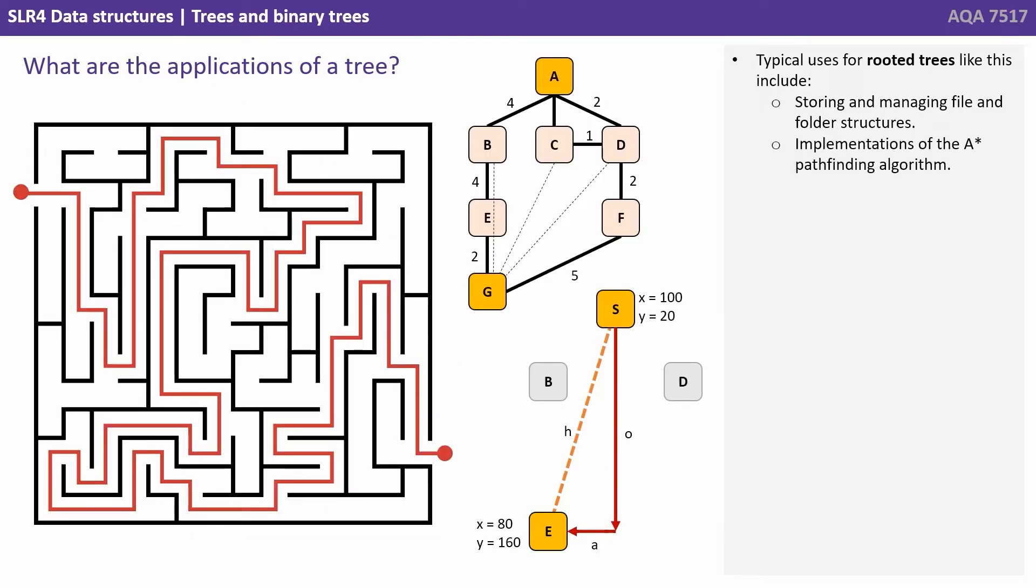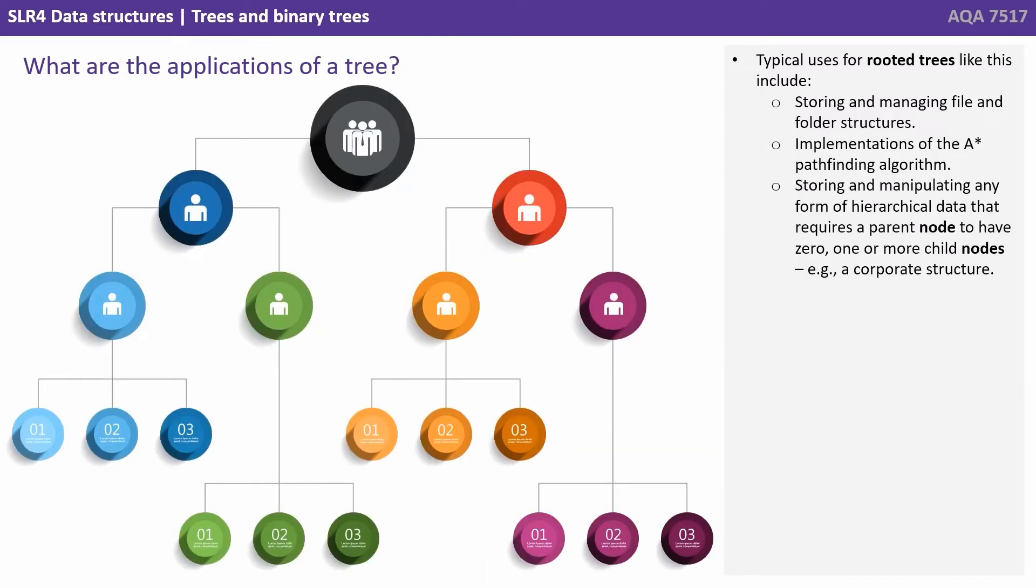Implementations of the A-star pathfinding algorithm. Storing and manipulating any form of hierarchical data that require a parent node to have zero, one or more child nodes, for example a corporate hierarchy structure.